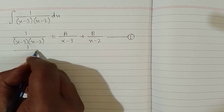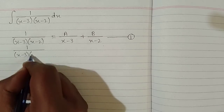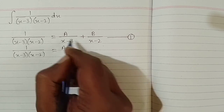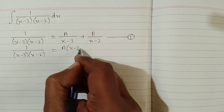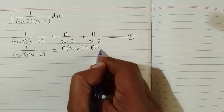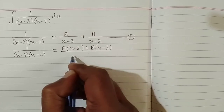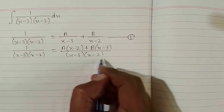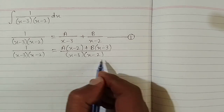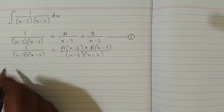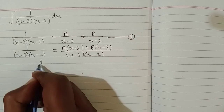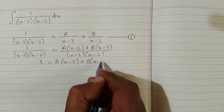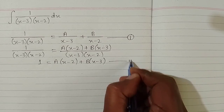The left side remains the same, and we simplify the two fractions on the right: A times (x minus 2) plus B times (x minus 3), all upon (x minus 3) multiplied by (x minus 2). Now if we multiply both sides by (x minus 3) and (x minus 2), we get 1 is equal to A times (x minus 2) plus B times (x minus 3). Suppose this is the second identity.